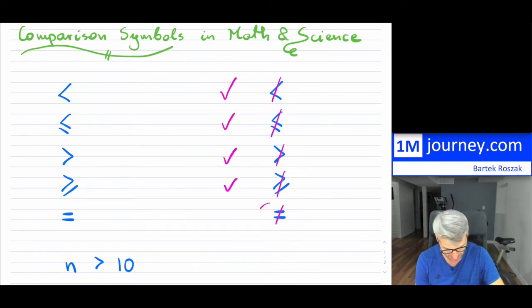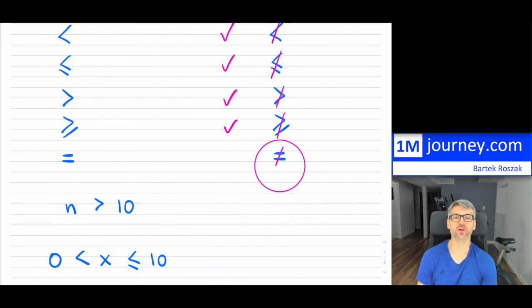Now this one is actually very popular because sometimes we don't want certain things to be equal to something, so they can be equal to everything except maybe some number.